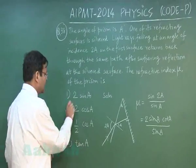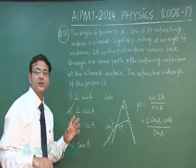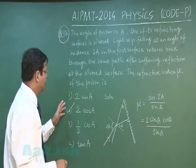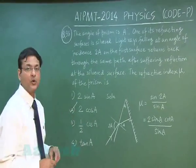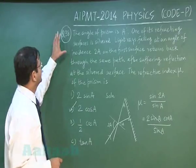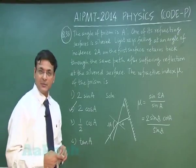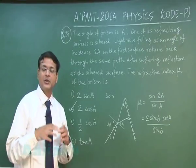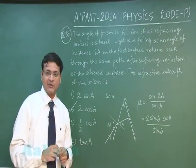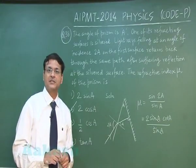So the appropriate option is the second one: 2cos(A). That explains question 38. Now let me explain question 39.